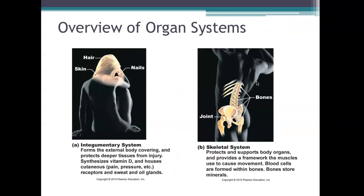I want to review all the different organ systems. We'll cover many of them, but I've eliminated some based on what's covered in AP Bio or what I felt was less essential. The integumentary system — hair, skin, and nails — provides protection, synthesizes vitamin D, houses pain and pressure receptors, and has sweat and oil glands. The skeletal system provides the framework for muscles, is important in blood cell formation, and bones store minerals — but we won't cover that one.